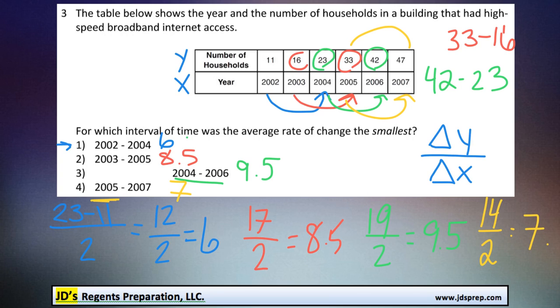So it looks like our answer is, in fact, the first one, because 6 is the smallest rate of change out of those four possibilities. All right, thanks for visiting JD's Regents Preparation.